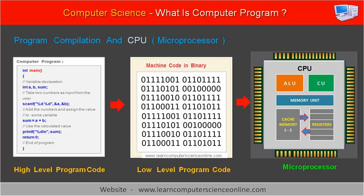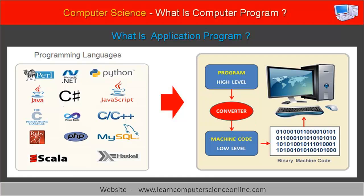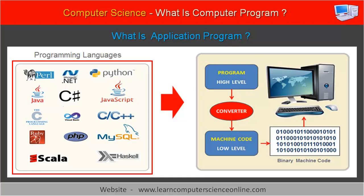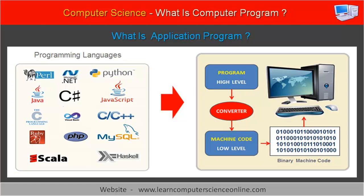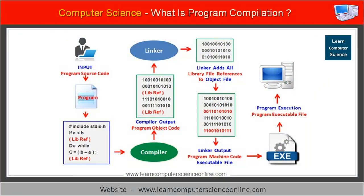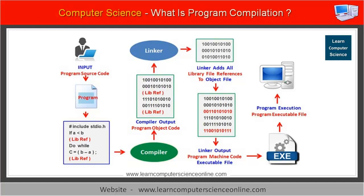Program compilation is a process in which a human-readable program code written in any programming language such as C, C++, Java, or Python is converted into a machine-readable code in binary that the CPU can decode and execute. The compiler converts the program source code into object code in binary. However, this object code cannot be directly sent for execution by the operating system. Therefore, the object code files further need to be processed by another program called the linker.